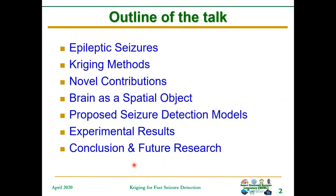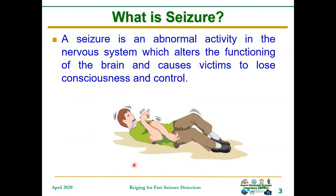This is the outline of my talk. What is seizure? For every action that takes place in the body, there is a corresponding trigger by firing neurons in the brain which send signals to those parts of the body that need to be controlled. For example, if you need to move your hands, you premeditate before that action takes place.